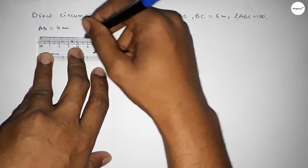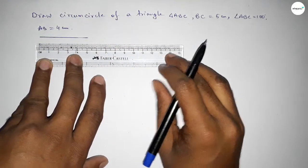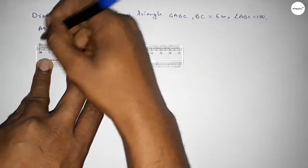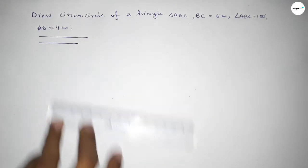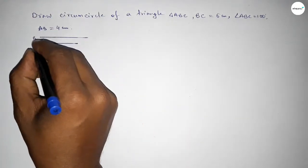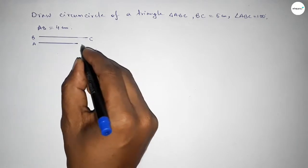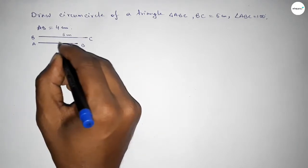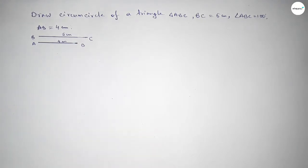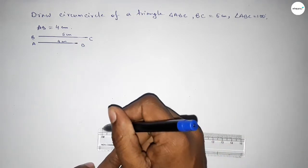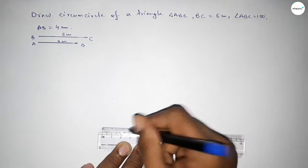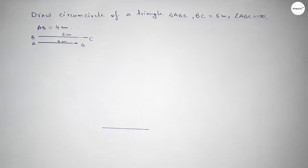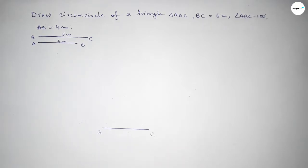First, drawing a line of length 5 centimeters — this is line BC. Then drawing another line of 4 centimeters — this is line AB. So BC is 5 centimeters and AB is 4 centimeters. Now, taking point B and point C on the 5 centimeter line.